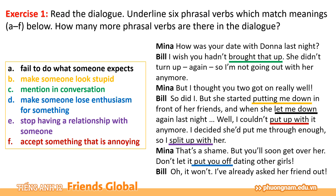And now let's take a look at the other phrasal verbs that also appear in this dialogue. Bây giờ chúng ta cùng xem qua những cụm động từ khác cũng xuất hiện trong đoạn hội thoại này nhé. First, we have 'turn up' — có nghĩa là xuất hiện. Tiếp theo, 'going out with somebody' — hẹn hò với một ai đó. Next, 'got on' — có mối quan hệ tốt với một ai đó. 'Put me through' — đưa ai vào một tình huống không dễ chịu. Và cuối cùng, 'ask somebody out' — rủ ai đó đi hẹn hò.